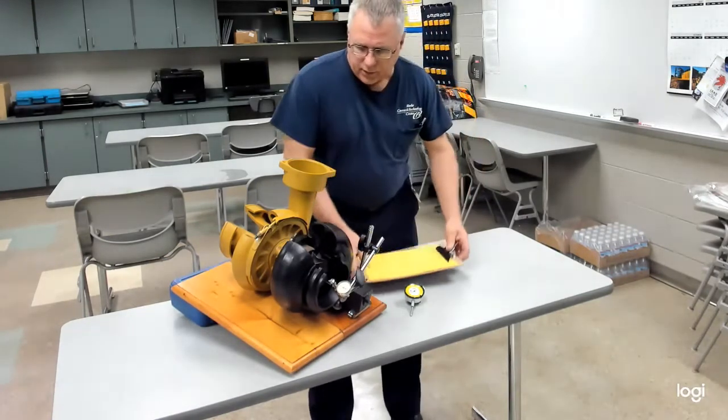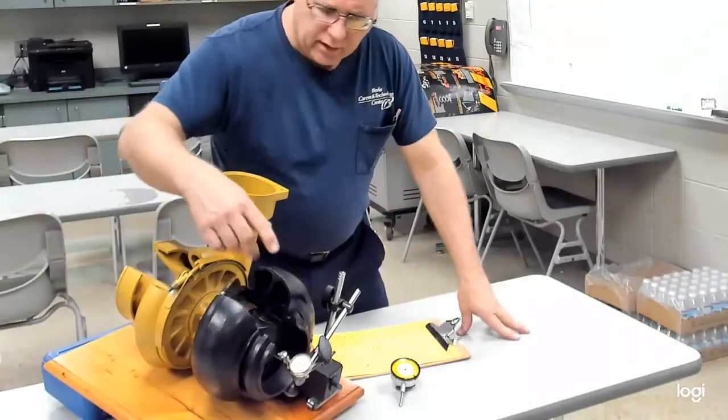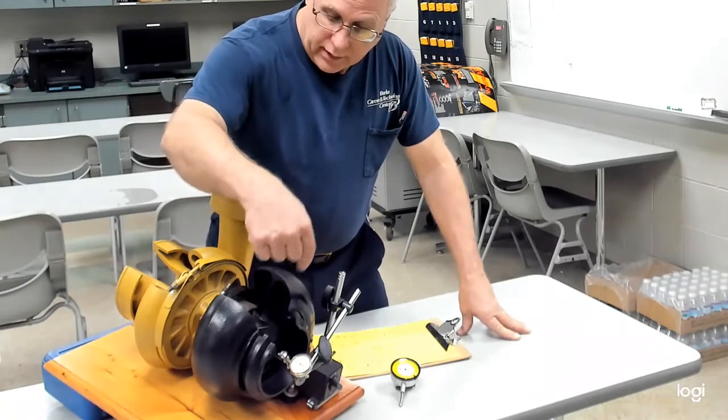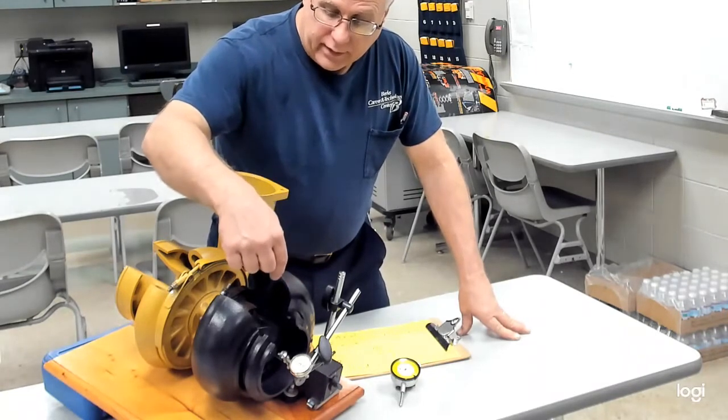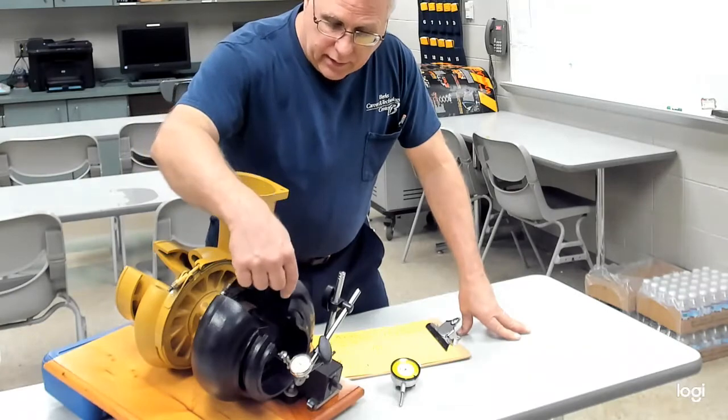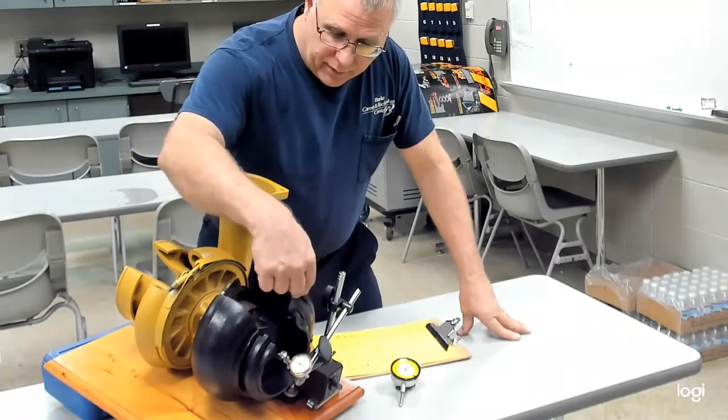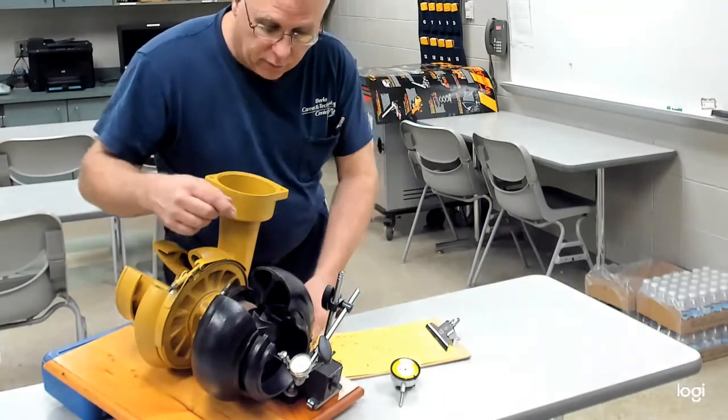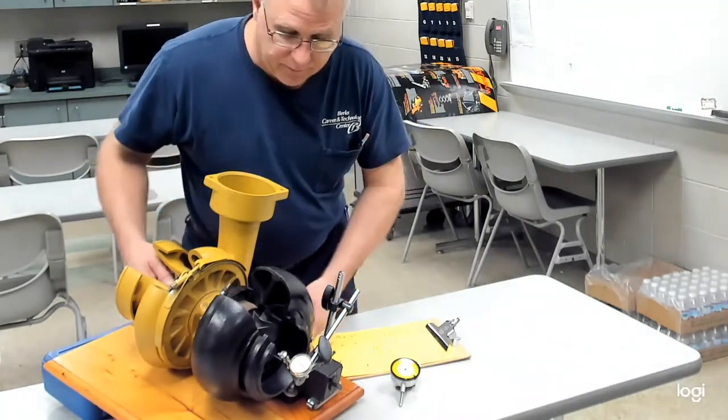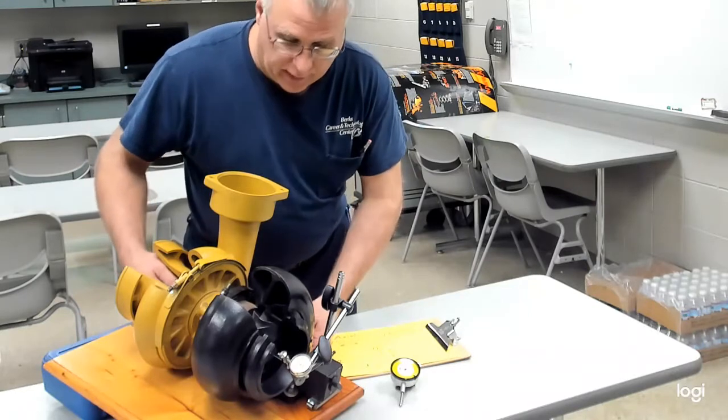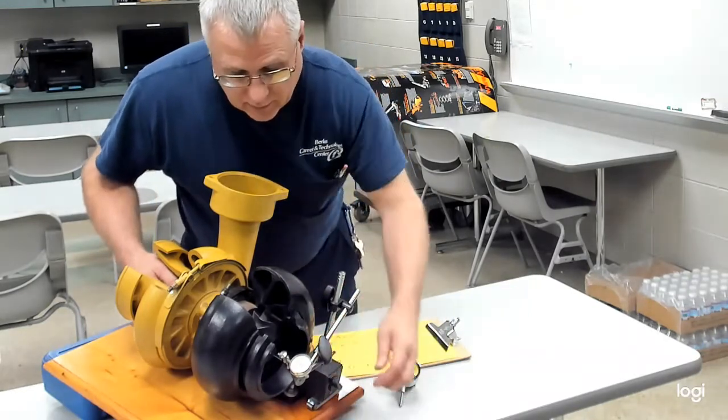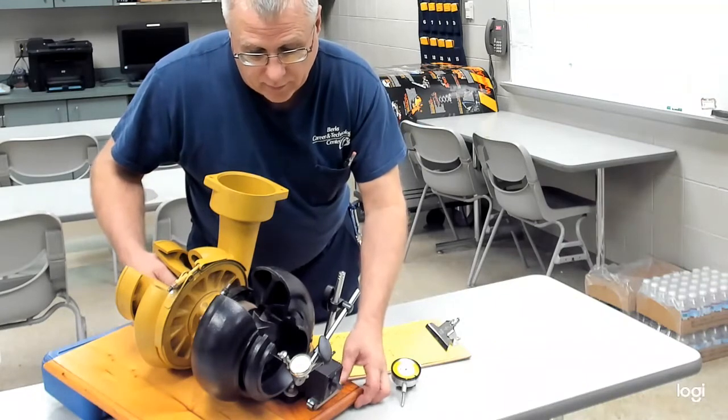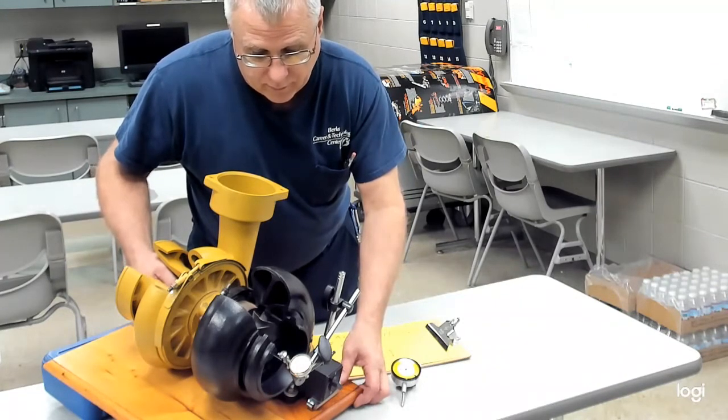If we look at the turbocharger setup we have here, we have a dial indicator with an attachment going into the turbine side of the turbocharger. We're just right inside the tip of it, and we're going to demonstrate the radial movement, so it'll be up and down. If you put your hand on the compressor side, you don't necessarily have to be set on zero, but you're going to move it up and down.